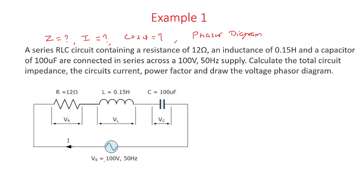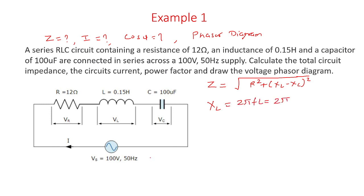We have the supply voltage of 100 volt and frequency of 50 hertz, and the resistor, inductor, and capacitor values are given. First, we need to find the impedance using the formula: square root of R squared plus (XL minus Xc) whole squared. We don't have XL and Xc directly, so XL can be calculated by 2πFL, that is 2π multiplied by 50 multiplied by 0.15 henry. Solving this, we get XL equal to 47.13 ohm.